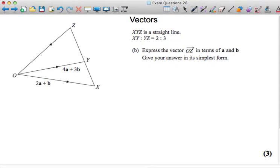Second part of the question. XYZ is a straight line. XY to YZ is in the ratio 2 to 3. Express the vector OZ in terms of A and B. Give your answer in its simplest form.